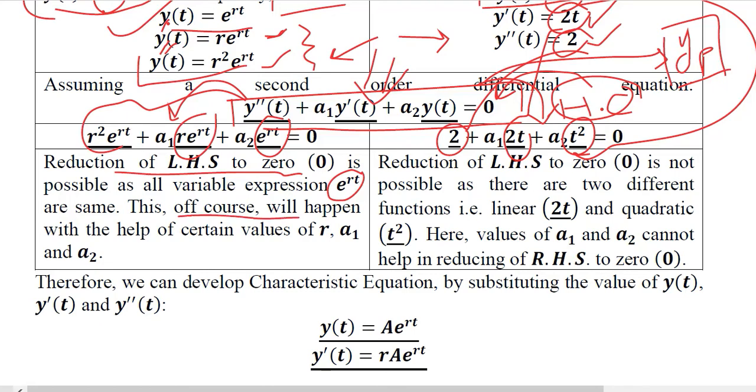This of course will happen with the help of certain values of R, A1 and A2. However if you look at this side, that is the right hand side, the left hand side cannot be equal to zero because there are two different functions, linear 2T and quadratic t-square.